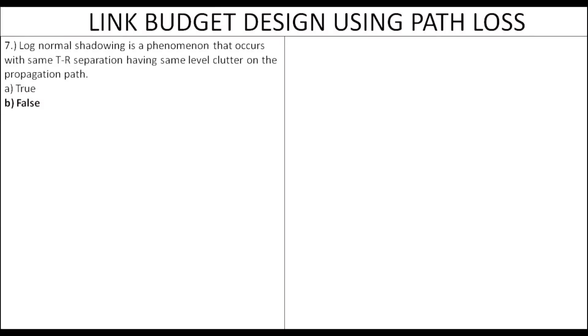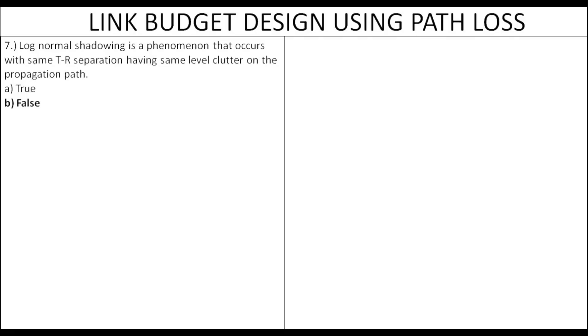For log normal shadowing, you use the same tier separation but different levels of clutter. Using the same level of clutter is false. The same tier with different level of clutter is true.